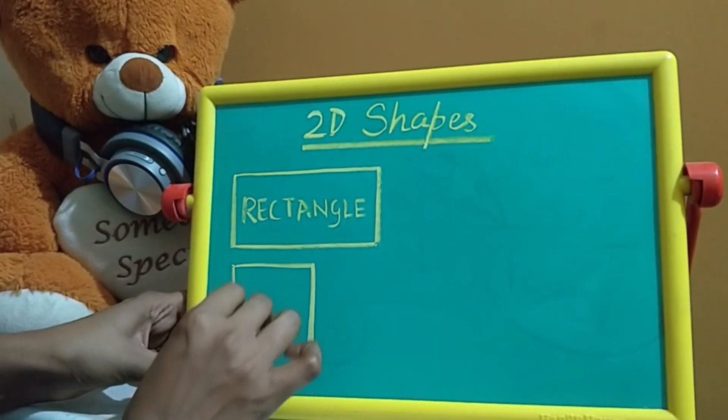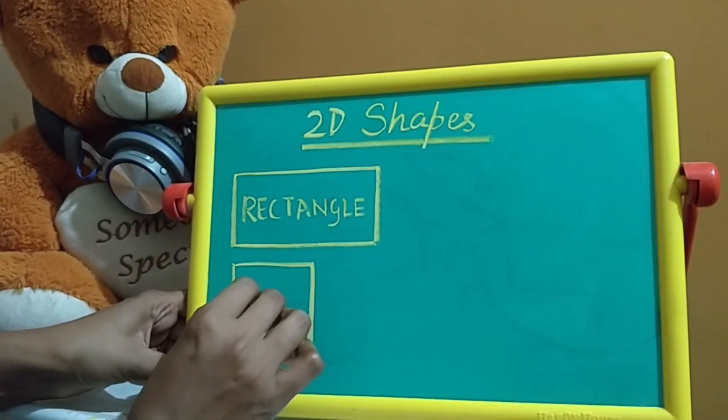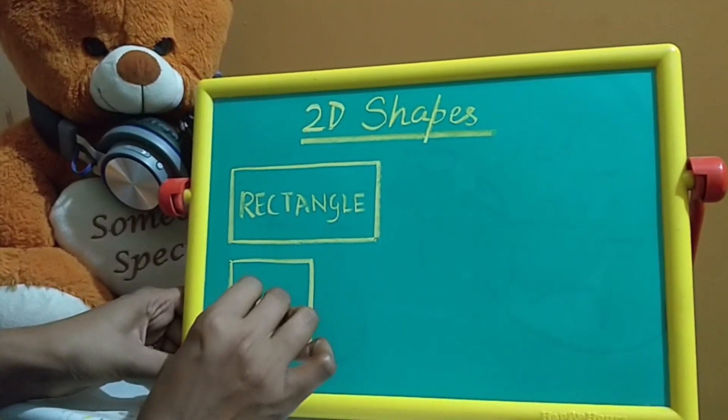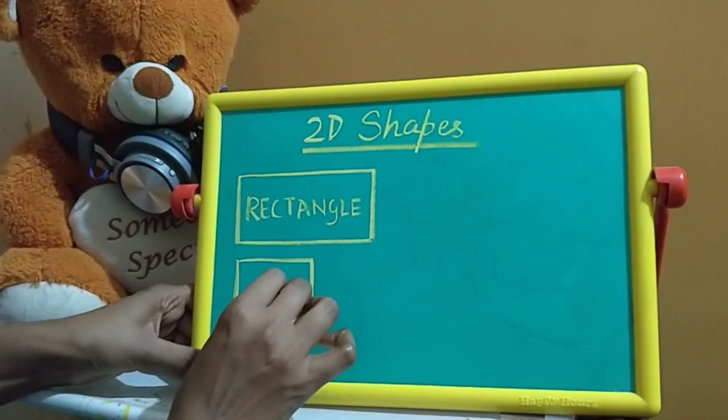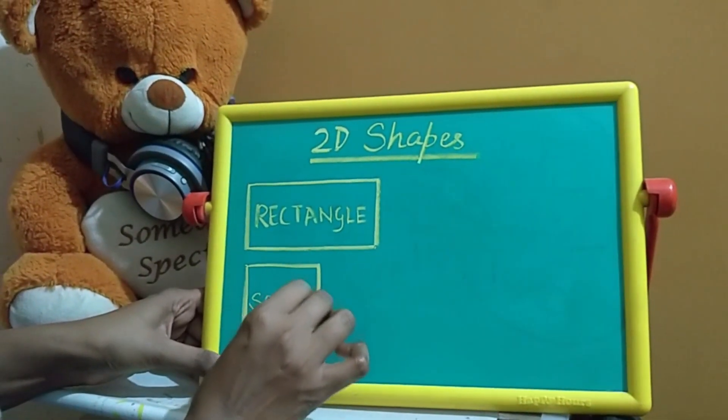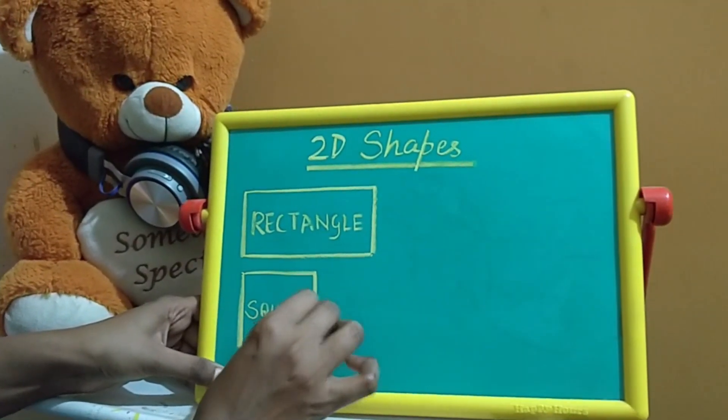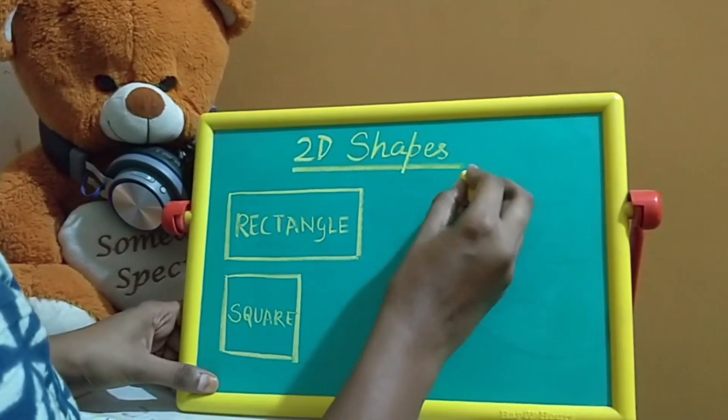The next one is Square. What is this Square? A Square has 4 equal sides, 4 equal sides.